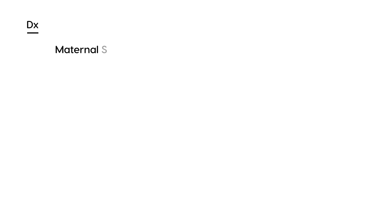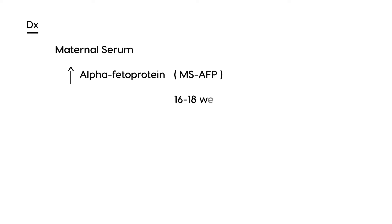The diagnosis is done prenatally by measuring certain markers in the maternal blood or amniotic fluid. The maternal serum is tested for something called alpha-fetoprotein, abbreviated MS-AFP. If this is elevated, in particular around 16 to 18 weeks, it is a very troublesome sign and a good predictor that there are indeed neural tube defects in the fetus.